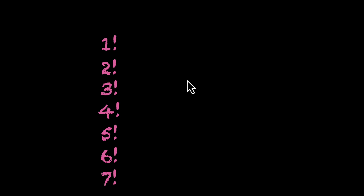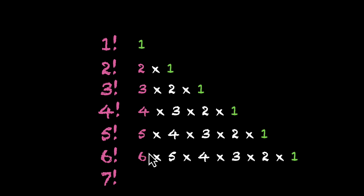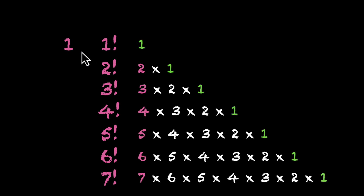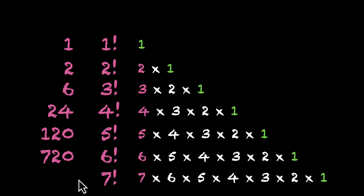Okay, let's do it together. 1 factorial is just 1 because you start with 1 and end at 1. 2 factorial means you start with 2. 3 factorial means you start with 3. 4 factorial means you start with 4, and so on. So: 1! = 1, 2! = 2, 3! = 3 × 2 = 6, 4! = 4 × 6 = 24, 5! = 5 × 24 = 120, 6! = 6 × 120 = 720, and 7! = 7 × 720 = 5040.